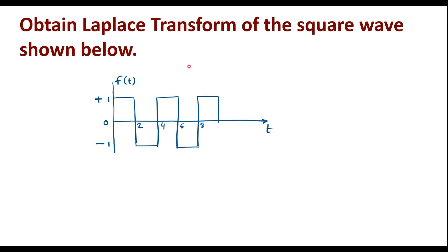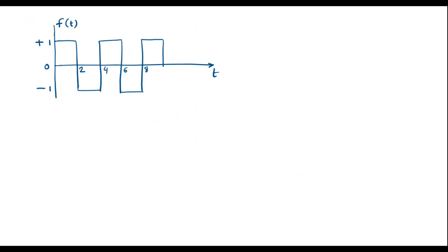In this video, I will solve one problem on Laplace transform. Obtain the Laplace transform of the square wave shown below. This is the given periodic square wave — we need to find its Laplace transform. So f(t) is periodic. While calculating the Laplace transform of a periodic signal, first we need to consider only one cycle of the periodic signal.